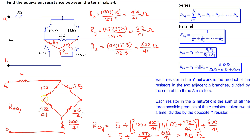In the redrawn circuit, two resistors are in series, another two resistors are in series, and the resulting equivalent resistors are in parallel with each other. Finally, we end up with three resistors in series. The equivalent resistance can be written as 5 plus the quantity 100 plus 400 over 41 in parallel with 125 plus 375 over 41, plus the last resistor. Again the equivalent resistance comes out as 80 ohms.